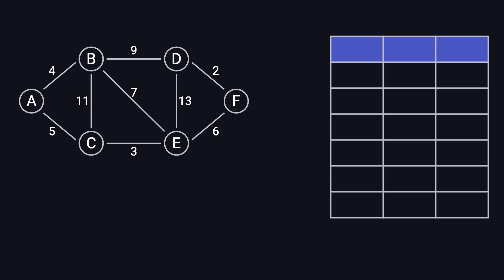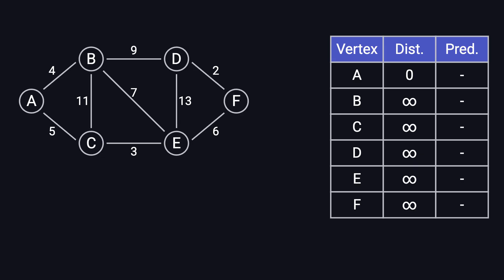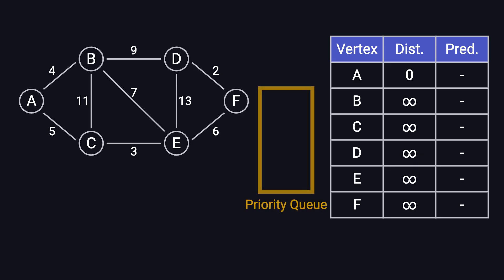First, we set up a table to keep track of three key pieces of information. The first column lists all nodes. The second column records the shortest known distance from A to each node. At the start, A's distance is zero, while all other nodes are set to infinity, indicating that their shortest paths are still unknown. The third column stores each node's predecessor, which helps us reconstruct the shortest path later. Initially, all predecessors are empty. To efficiently determine which node to process next, we use a priority queue, one of the key structures in this algorithm. It keeps track of nodes along with their current shortest distance from A. The algorithm continuously extracts the node with the shortest known distance, updates its neighboring nodes, and reinserts them into the queue if their shortest distance improves.